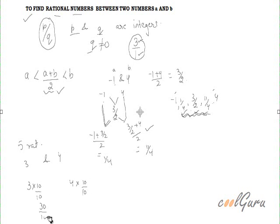So what I get: this becomes 30 by 10 and this number is 40 by 10. Actually, this is 4 and this is 3. But I have represented it in the form 30 by 10 and this is now 40 by 10.